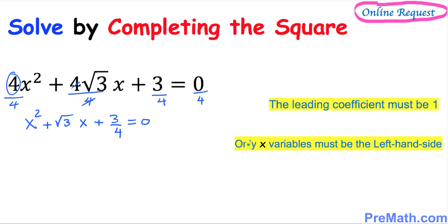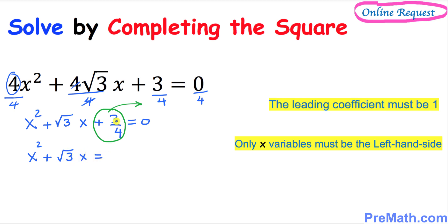In our next step we want to make sure only x variables are on the left hand side. That means this 3 over 4 must go to the right hand side. So we have x squared plus square root of 3 times x, and when you move this positive 3 over 4 to the other side it becomes negative 3 over 4.